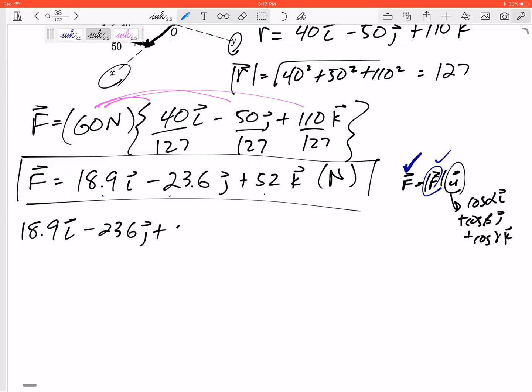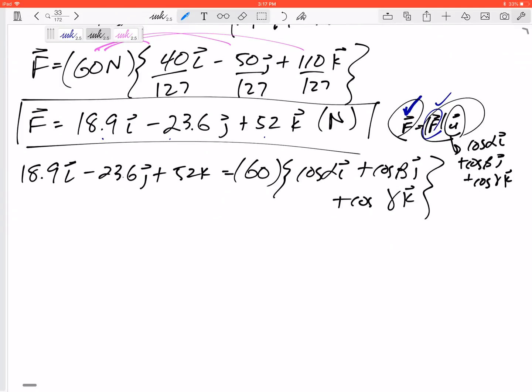So this is how I like to do this part. 18.9 in the I minus 23.6 in the J plus 52 in the K, that's the left hand side of my equation. The right hand side of my equation is 60 times cosine alpha I plus cosine beta J plus cosine gamma K.